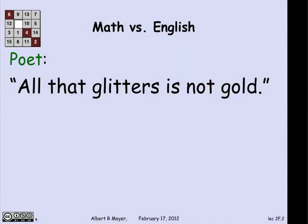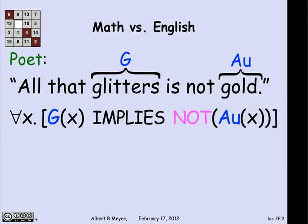Let's look at this phrase in English, where the poet says, "All that glitters is not gold." A literal translation of that would be: if we let G be 'glitters' and AU be 'gold', then this translates literally as: for every x, G(x) implies not AU(x) — if x glitters, then x is not gold. So is that a sensible translation?